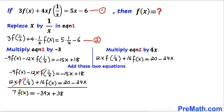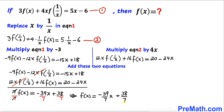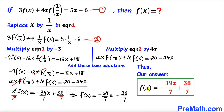Since we want to isolate f of x, let's divide every term by 7. The 7 and 7 cancel each other out, so we end up with f of x equals negative 39 over 7 times x plus 38 over 7. That is our final answer: f of x equals negative 39x divided by 7, plus 38 divided by 7.